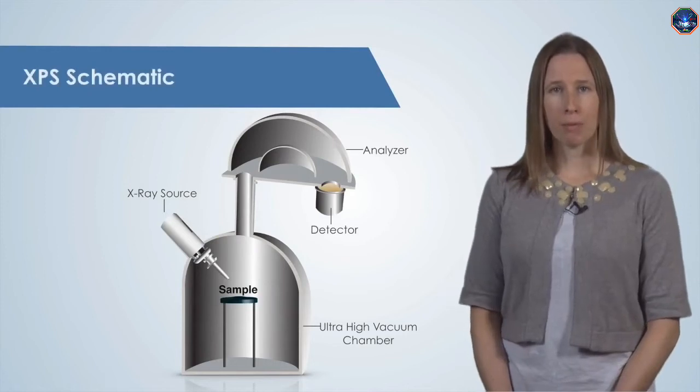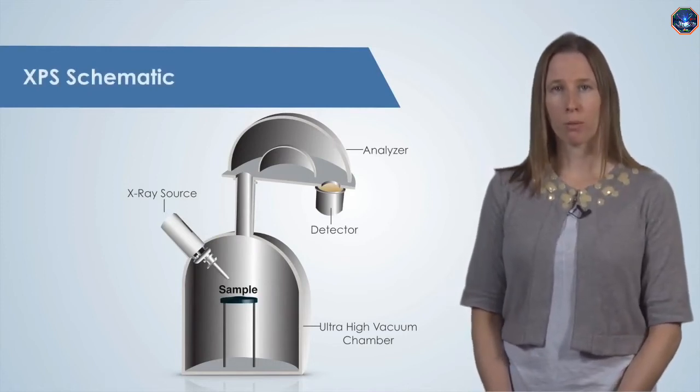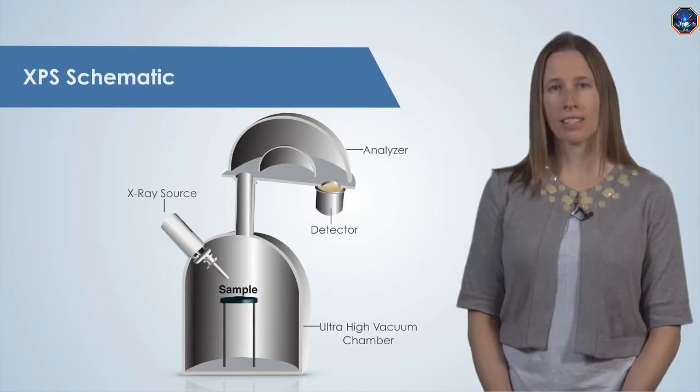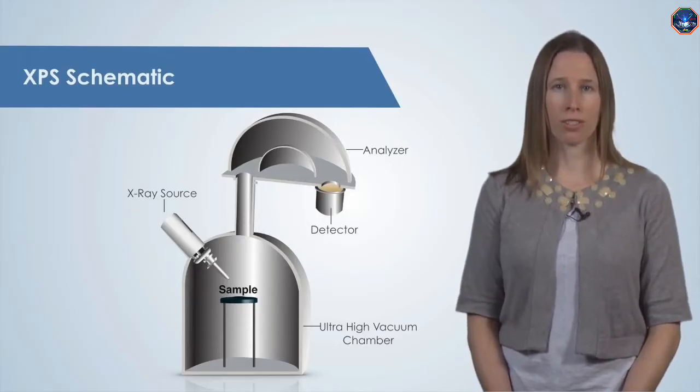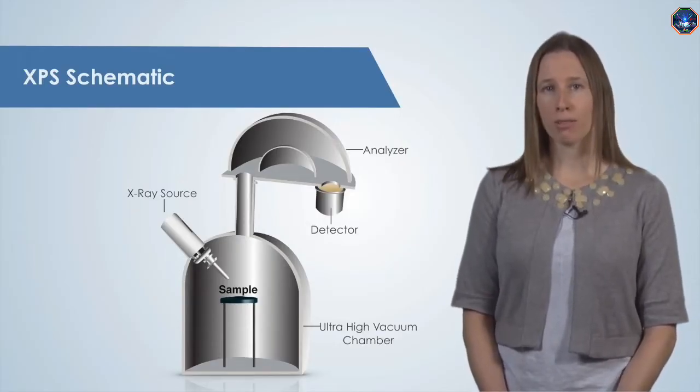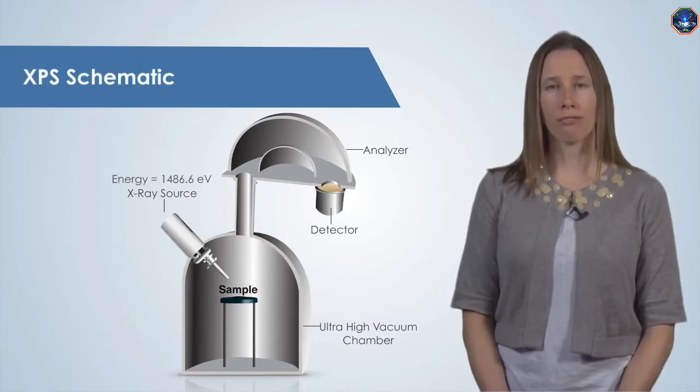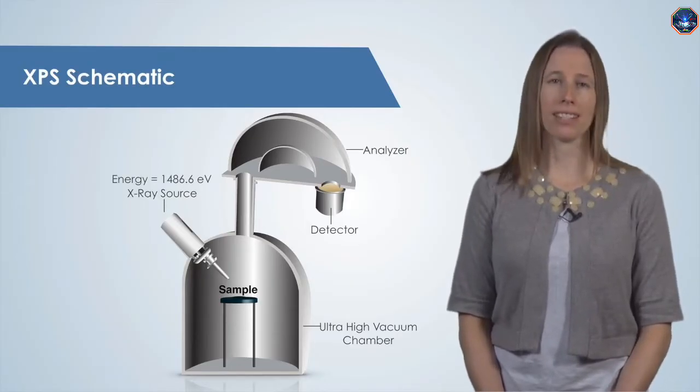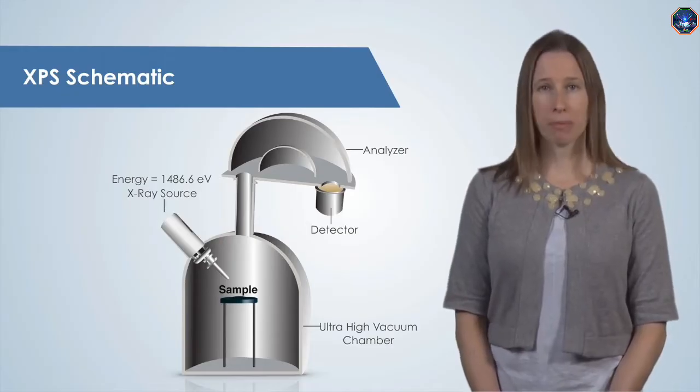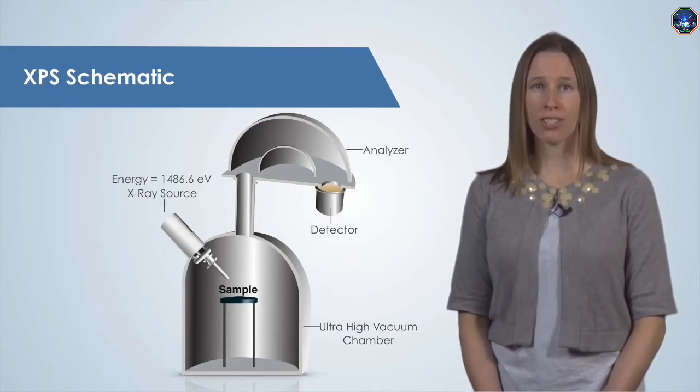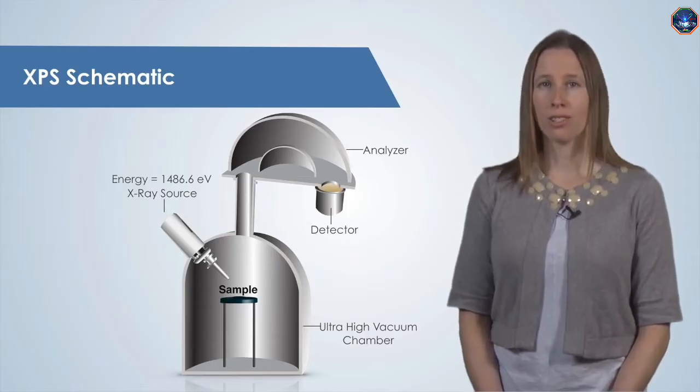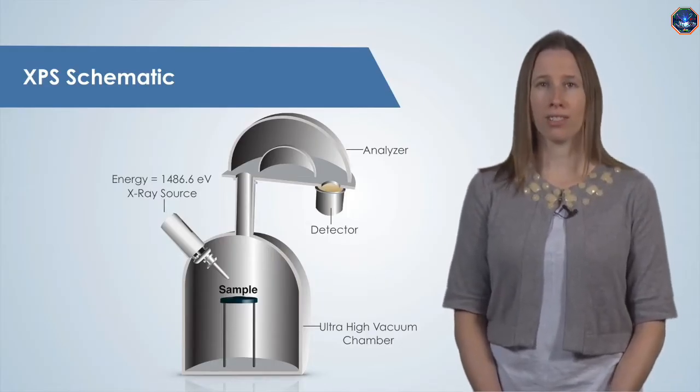The XPS experiment takes place in an ultra-high vacuum chamber, where pressures are typically in the 10 to the minus 9 torr range. One of the most common X-ray sources used in XPS has an energy of 1486.6 eV. As a comparison, visible light has energies of only 1.5 to 3 eV, so these X-rays have a lot of energy.